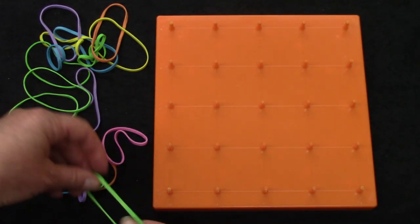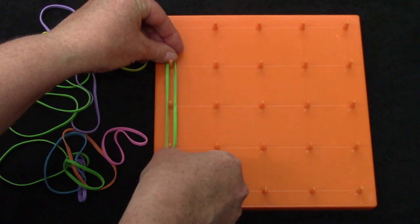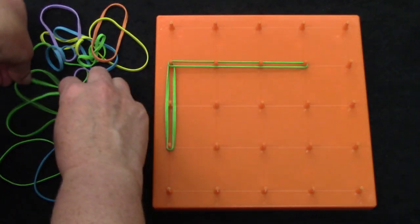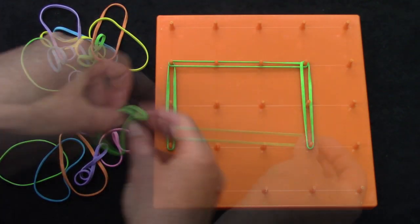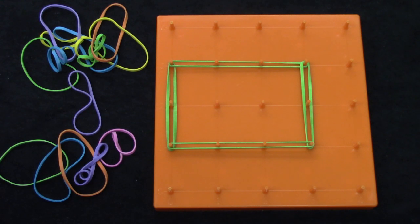I would like for you to try to make a four-sided shape with your geoboard. There's so many different types of four-sided shapes. What is this shape called? You're right, it's a rectangle.